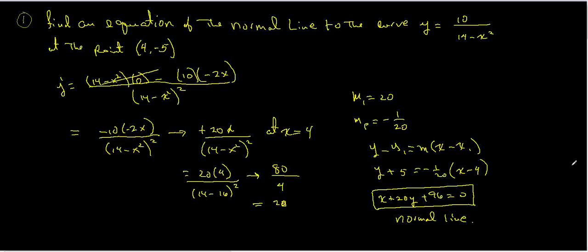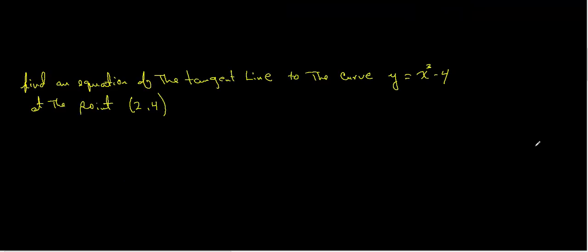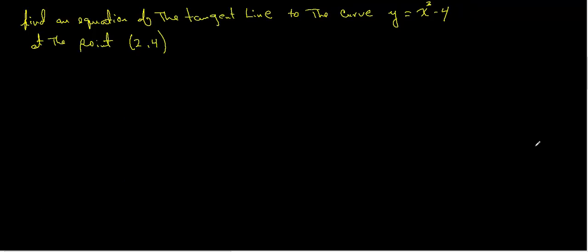So that's one example. The other example says: find the equation of the tangent line to the curve y equals x cubed minus 4. This function looks like a cubic shifted down by 4. The derivative dy/dx gives us 3x squared, since the derivative of negative 4 is 0.